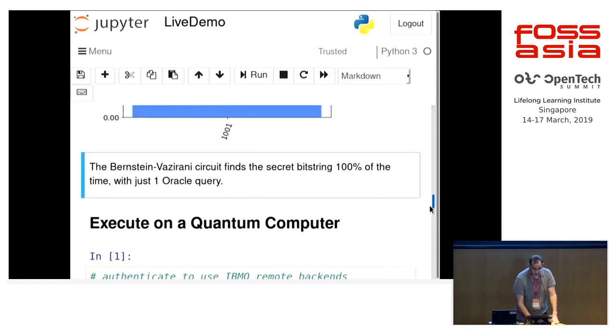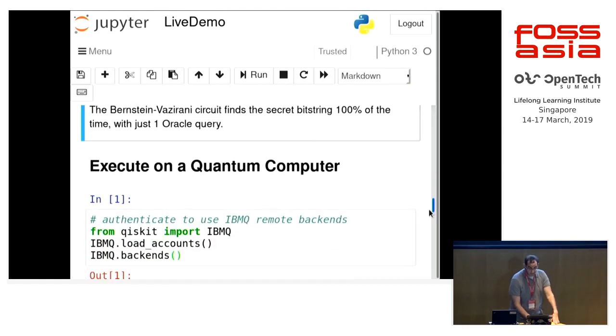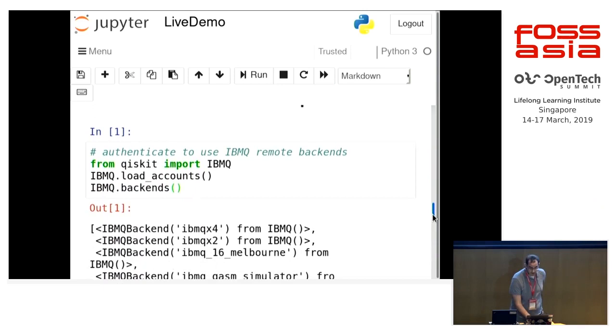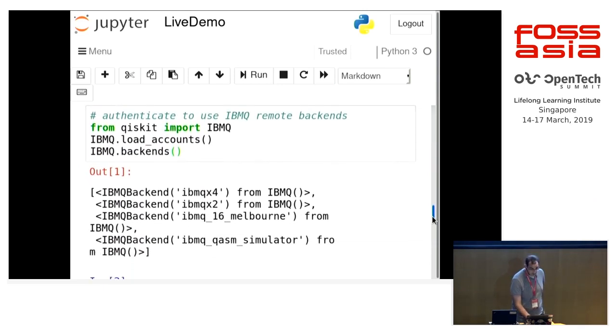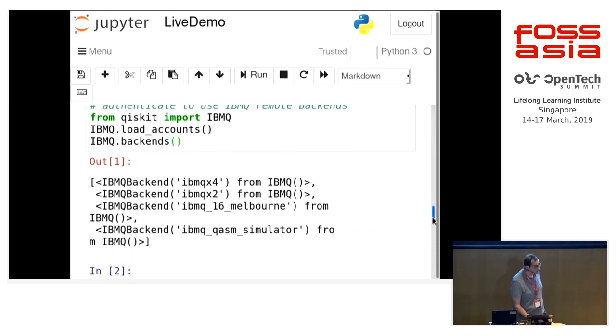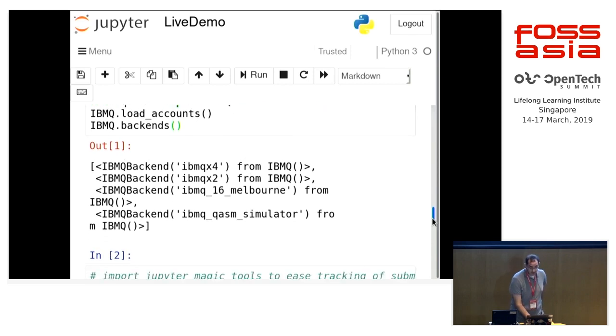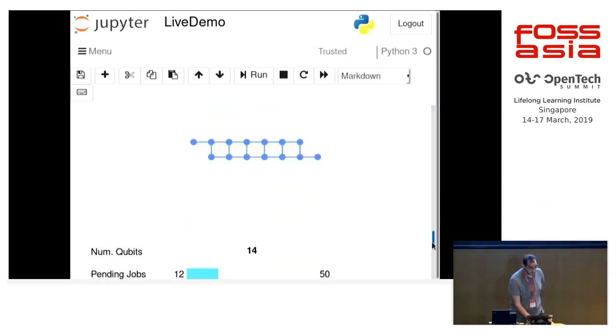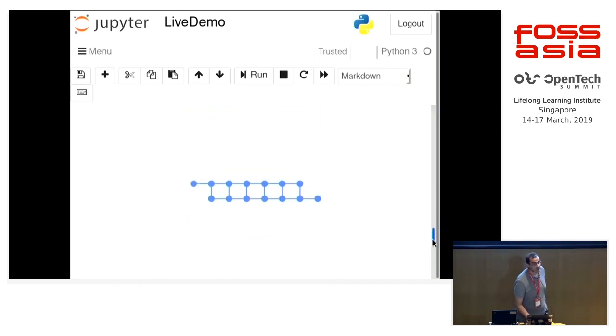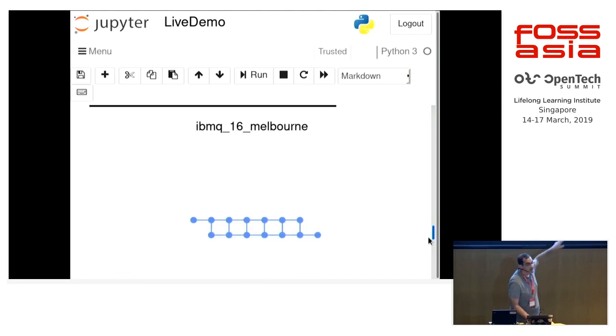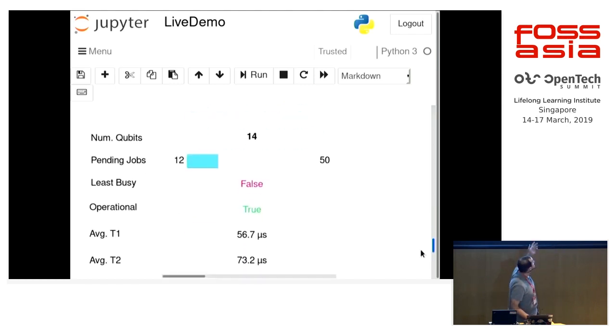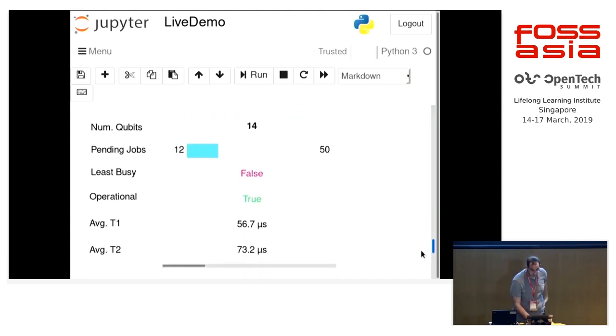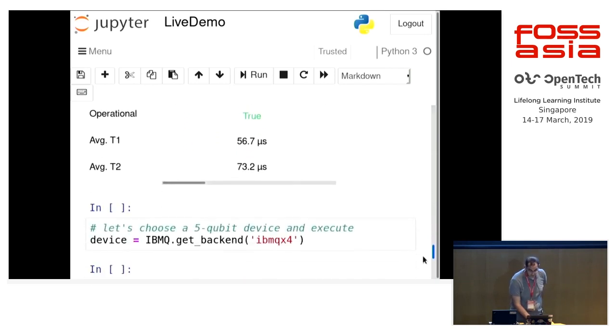Now we can run it on a real quantum computer. First I load my credentials, and I list the available devices. There are three quantum computers available to me with my credentials and then a simulator that's online. And I can print the state of them. You can see right there the qubit mapping and the current state. It's 14 qubits and some parameters about it. And then we're just going to pick one because this one's fast. And then run the circuit on it.